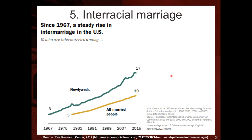The fifth point is interracial marriage. Based on data from the Pew Research Center, since 1967 there has been a steady rise in intermarriage rates in the US — increasing from 3% in the early 1980s to 10% in 2015 among all married people. Among newlyweds specifically, it increased from 3% in 1967 to 17% in 2015, so there is a clear increase in interracial marriage between these decades.